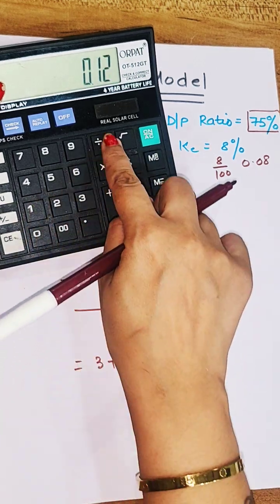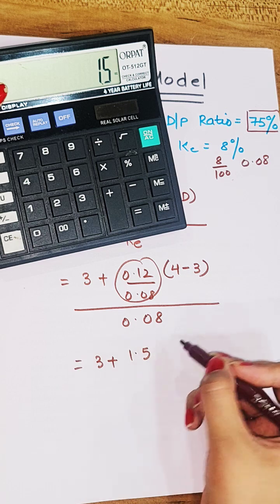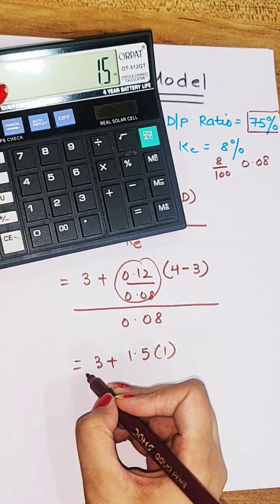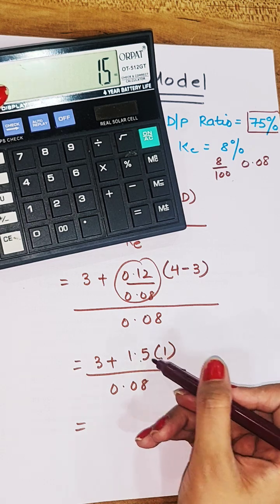0.12 by 0.08, we get 1.5, 4 minus 3 is 1, denominator we have 0.08.